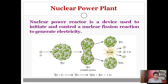The three neutrons formed further interact with three uranium-235 atoms, forming fissionable products with the release of nine neutrons. Those nine neutrons further react with another nine uranium-235, producing 27 neutrons. This process continues — this reaction is called a chain reaction.